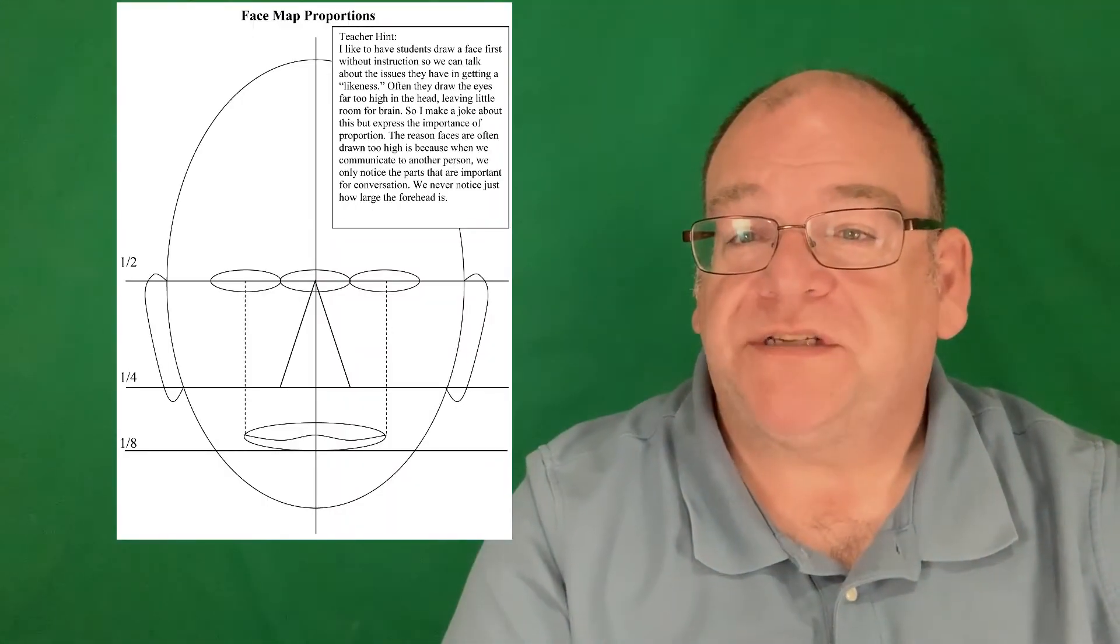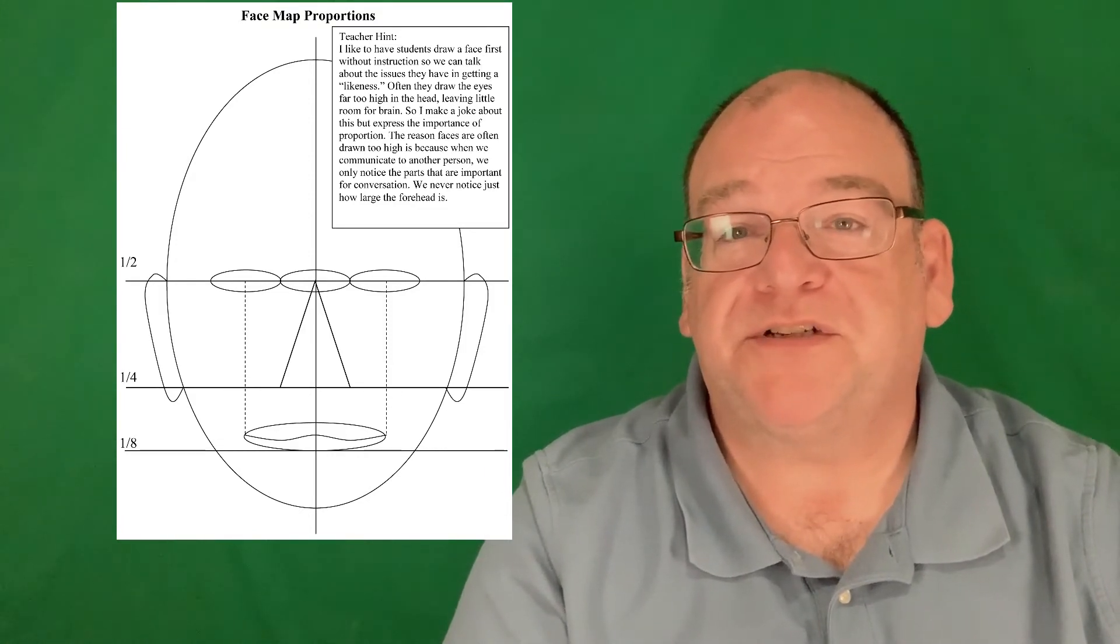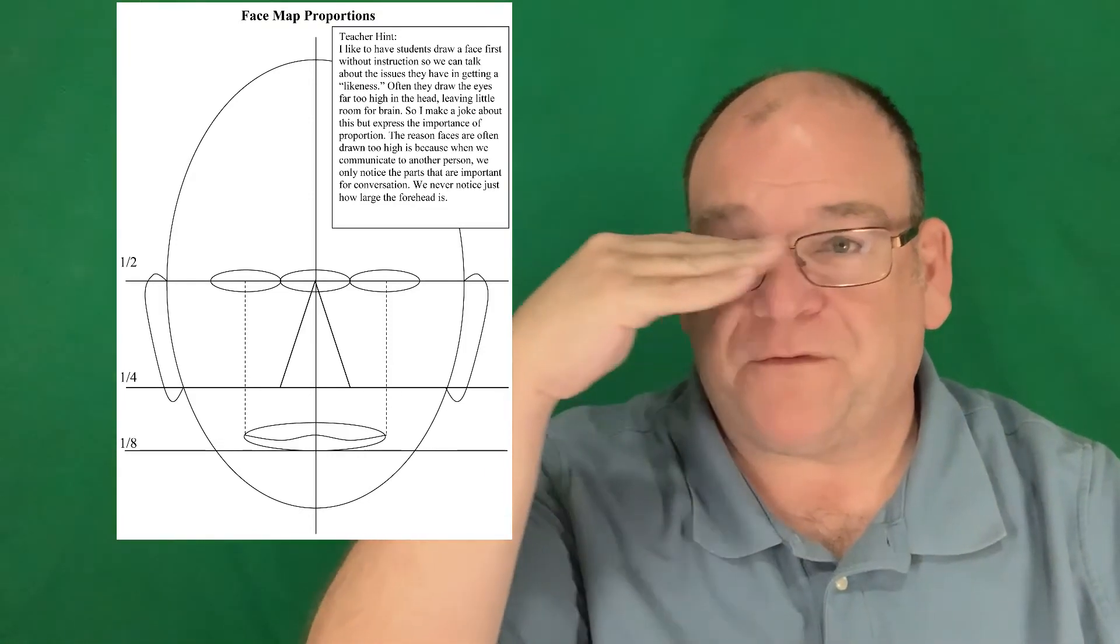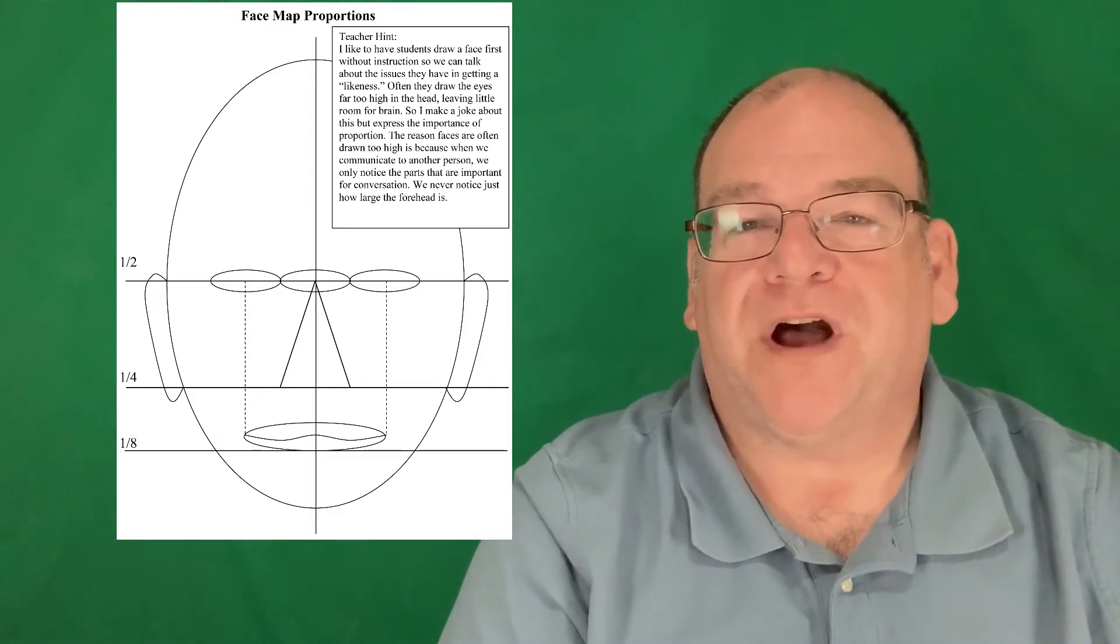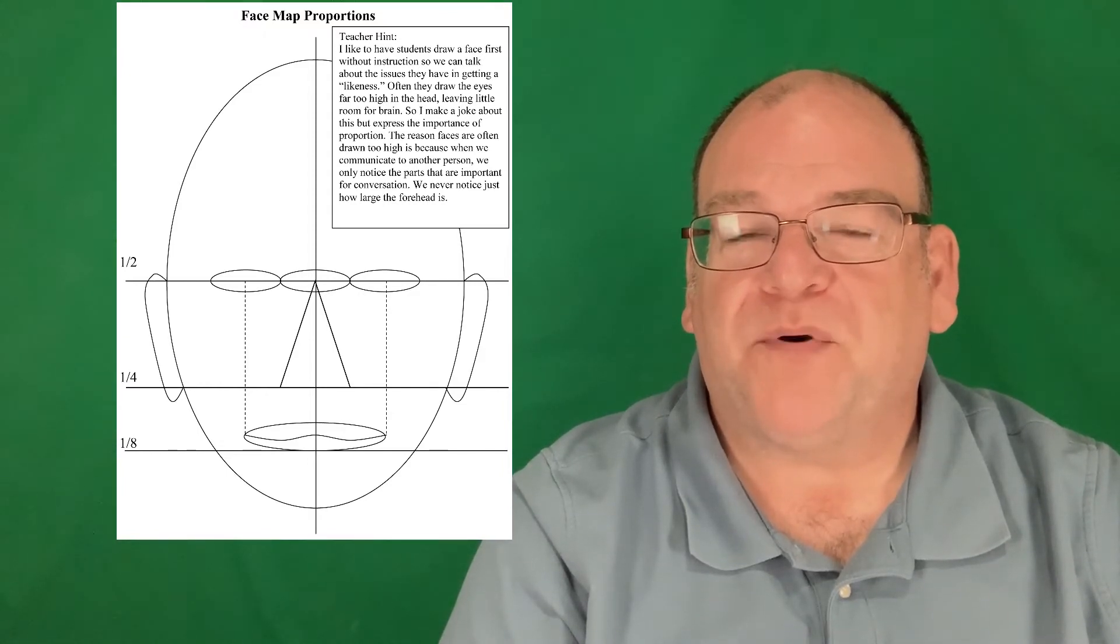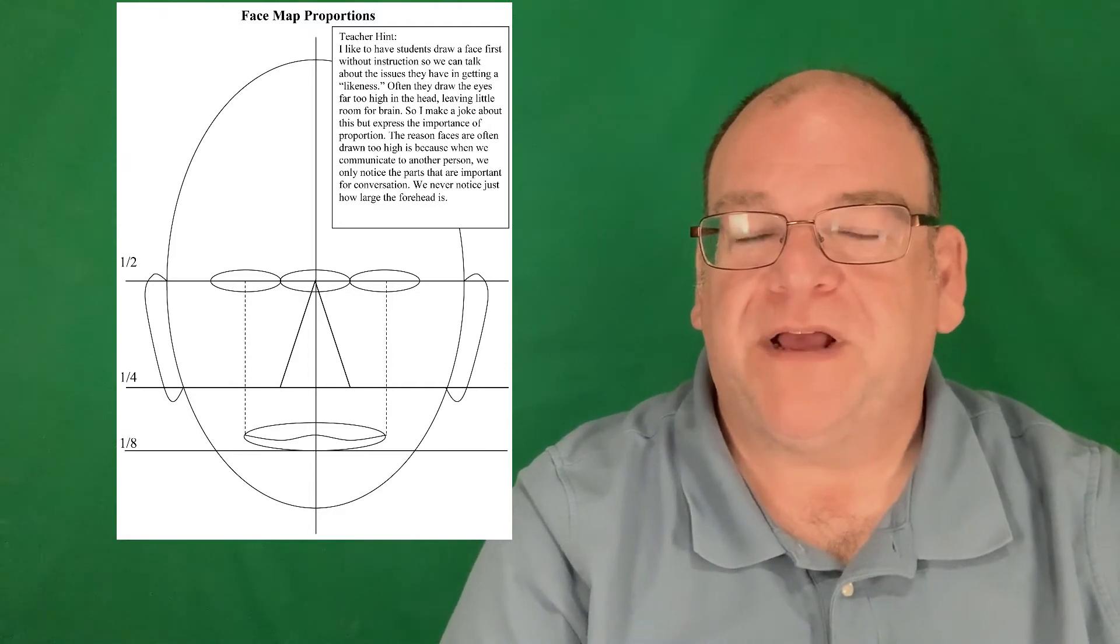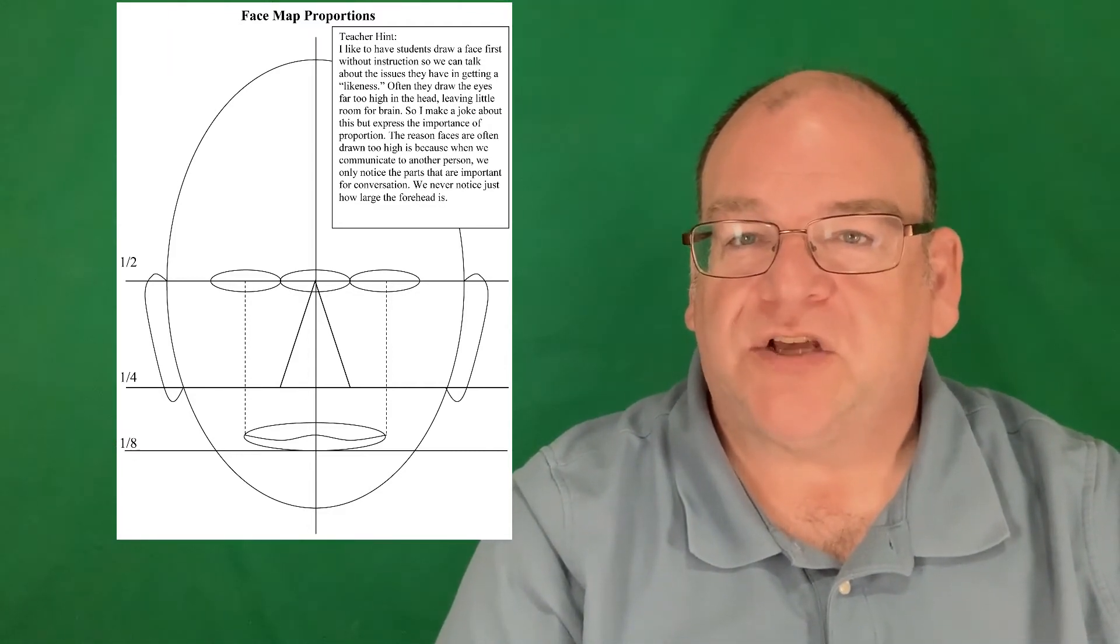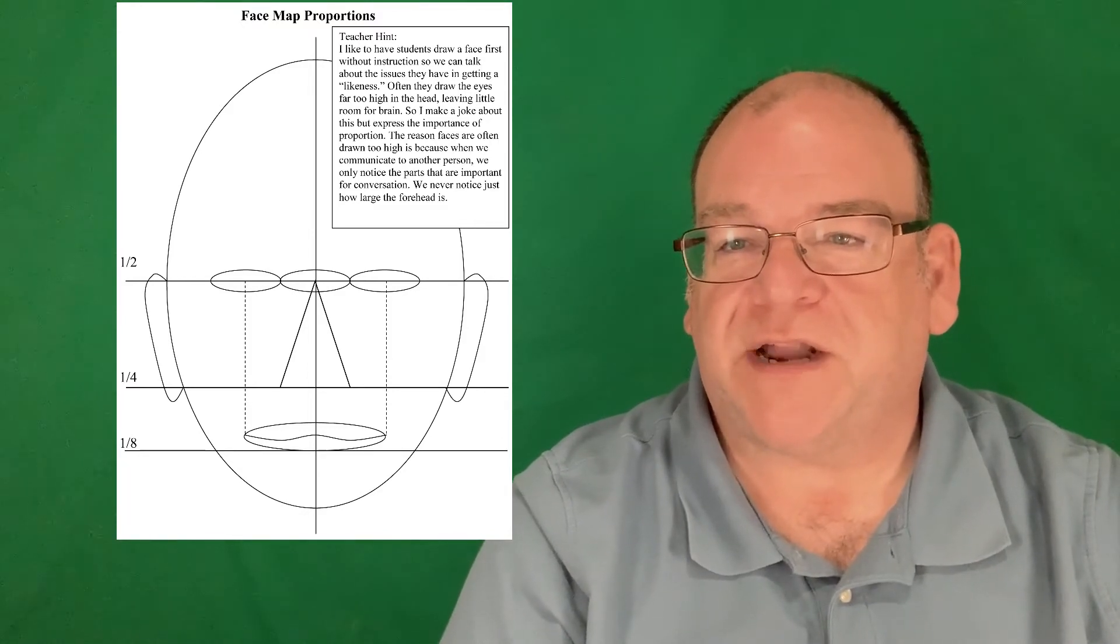Here we have facial proportions and obviously there's going to be a lot of measuring involved in this. Students don't really realize that their eyes are halfway on their head and this other half is for their brain. So we often do drawings where the eyes are way too high in the head. By breaking things down, measuring their faces, and doing a face map, you can have some fun. There's a lot of geometry in the human face and exploring that can be a lot of fun.